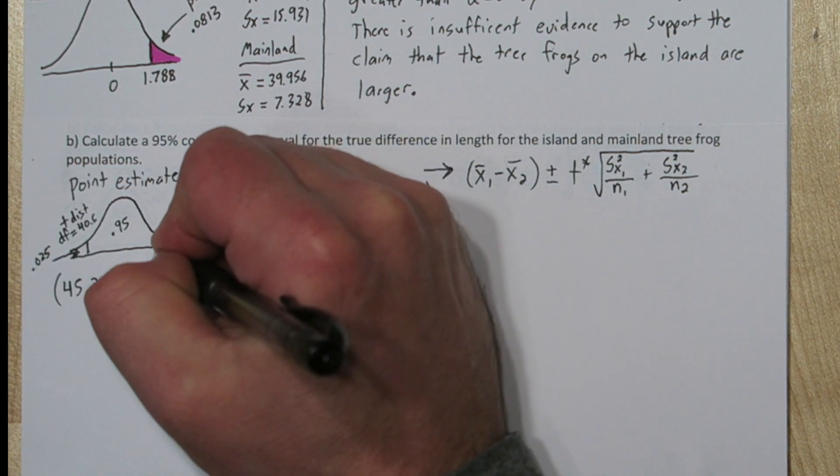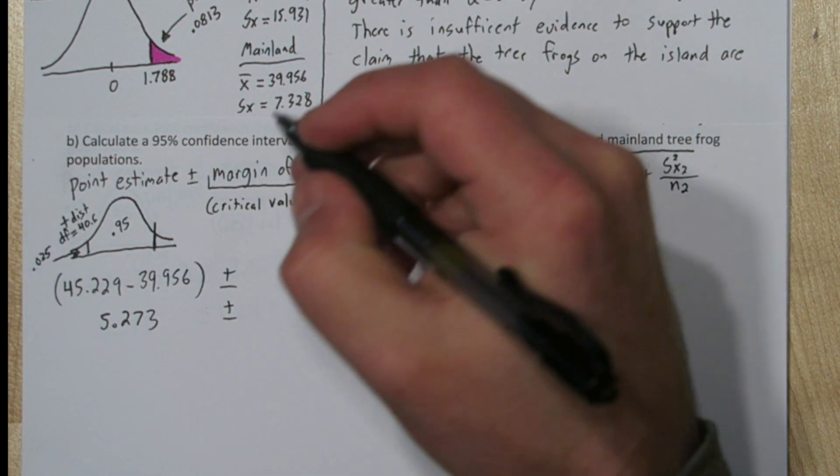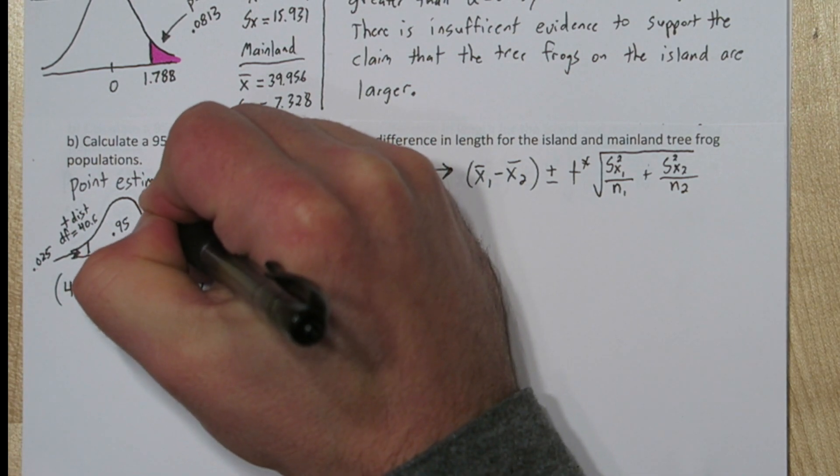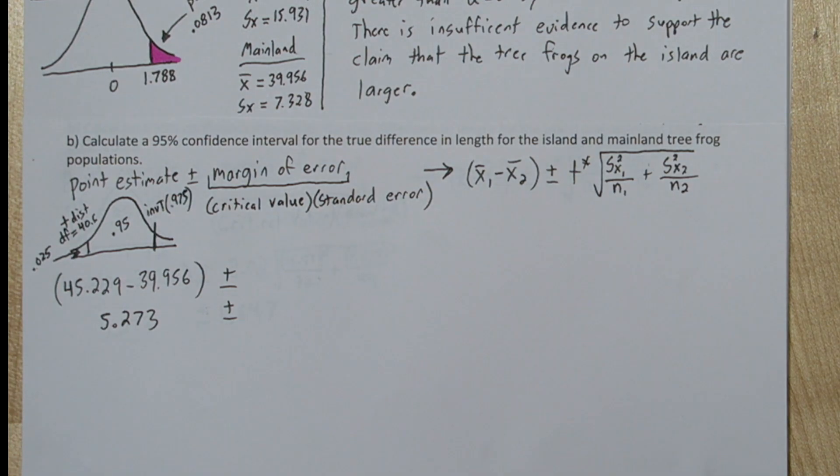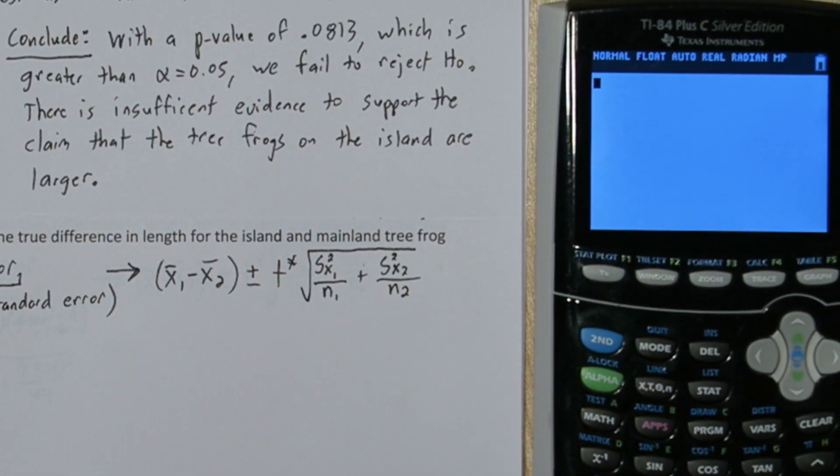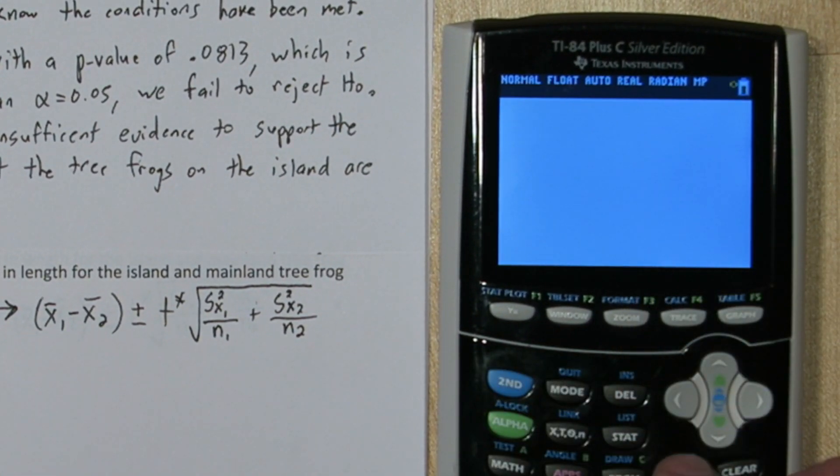So we're going to find what cuts off the lower 97.5% of this T distribution. And that's the 95% plus the 2.5% in the tail. So on your calculator press 2nd vars and go down to inverse T. For area put 0.975.